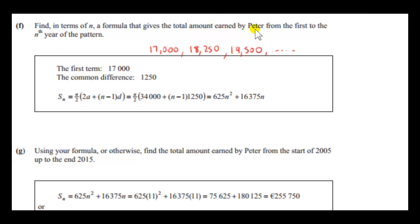Next, we will look for a formula that gives the total amount earned by Peter from the first to the nth year of the pattern. So here's the sequence of Peter's salaries. The first term A is 17,000. D, the common difference or constant difference, is just got by taking any term and subtracting the previous term. And of course we know that that's 1,250. That's what we were given. So that's D. Now we want to sum these terms. So we want to get the total amount earned by Peter over N years, whatever N is. N can be any number. So we want the sum of the first N terms of this arithmetic sequence. When we're adding the terms, we refer to it as an arithmetic series, actually. We use the word series when we're adding the terms. So here's the formula for the sum of the first N terms.